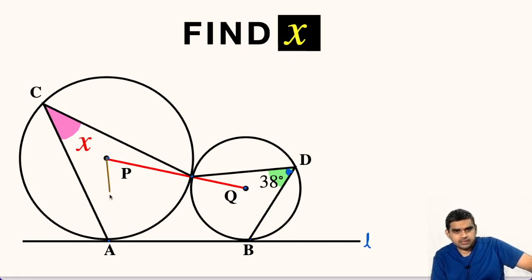The construction is to join points P and A, likewise points Q and B. PA will be perpendicular to AB and likewise QB will also be perpendicular to AB. What is the reason?